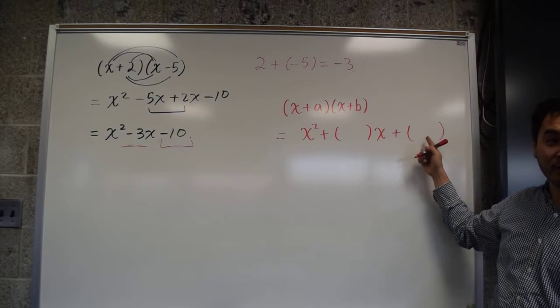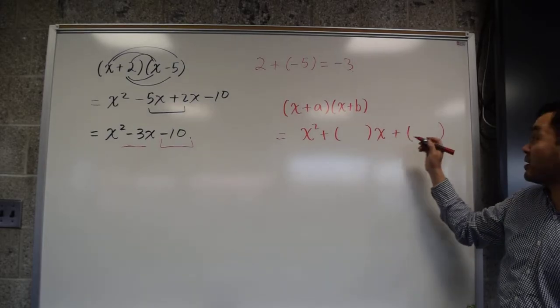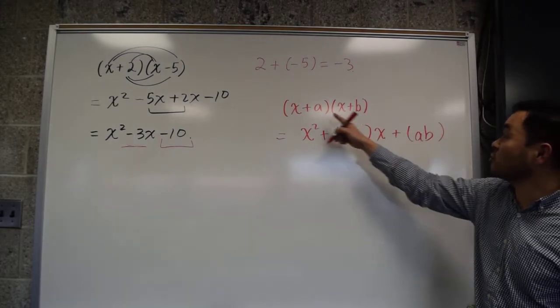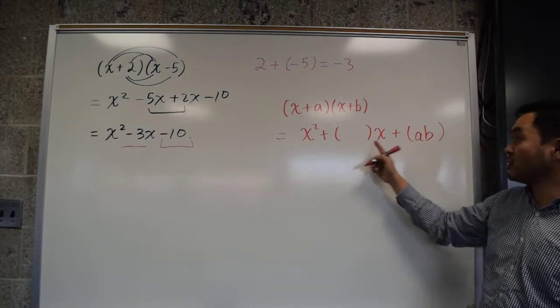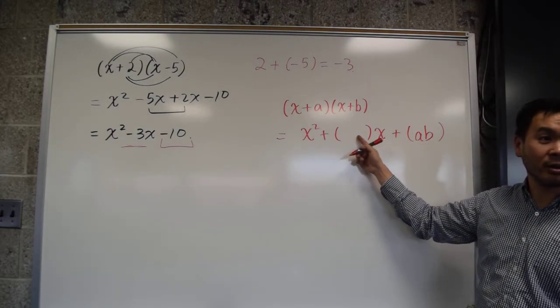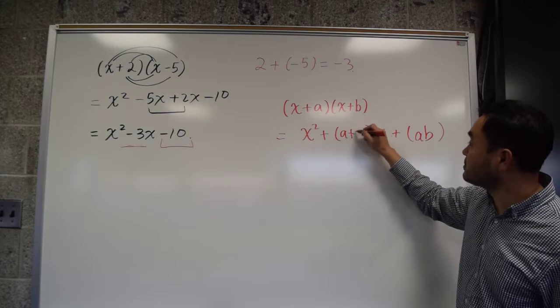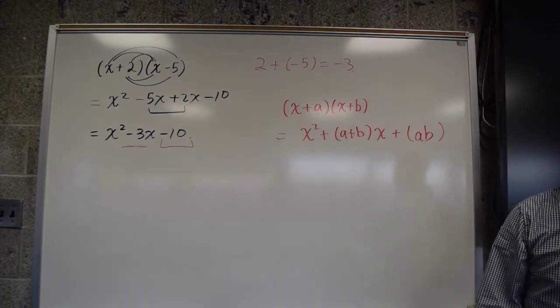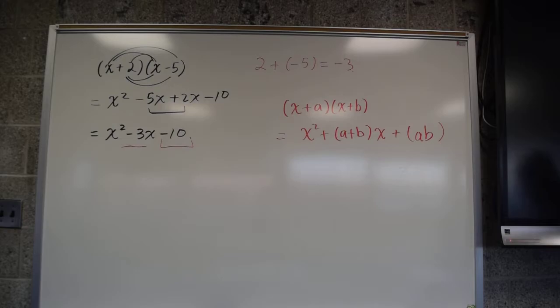a times b. a times b. These two numbers multiplied will go in here. What goes in here? a plus b. a plus b. So that's the way you expand polynomials.